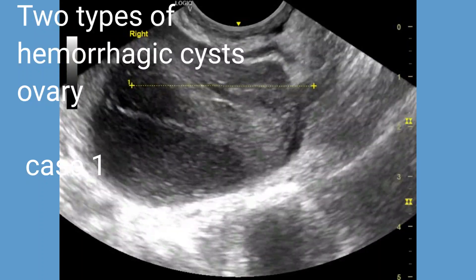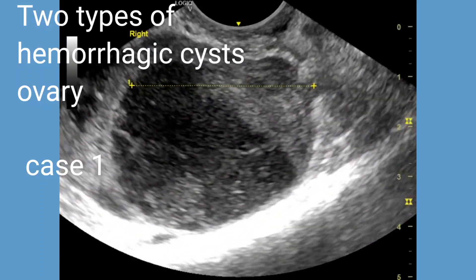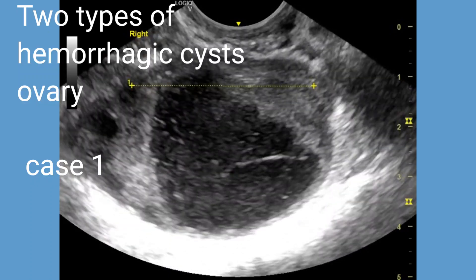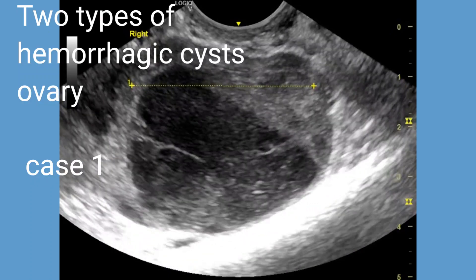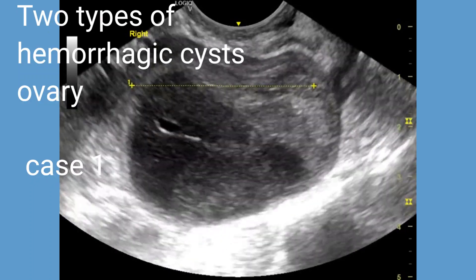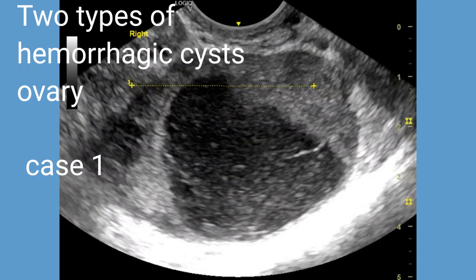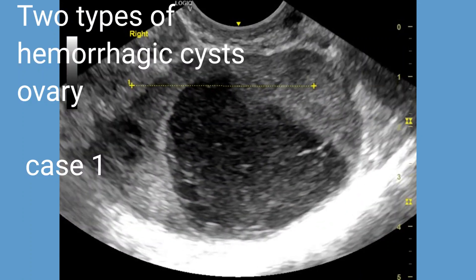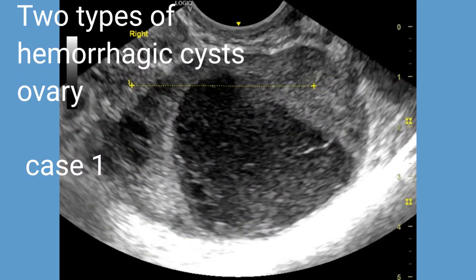Fluid debris levels and the fishnet appearance are two different ultrasound findings that can be associated with hemorrhagic ovarian cysts. First, we describe the fluid debris levels seen in hemorrhagic ovarian cysts.